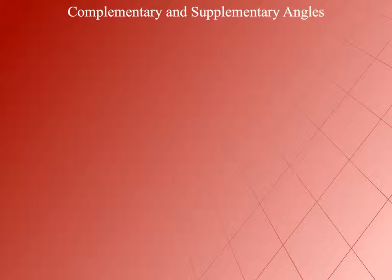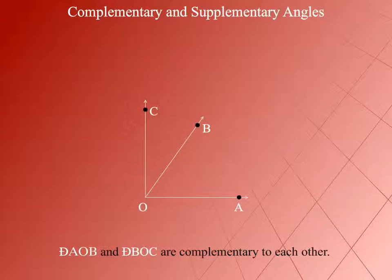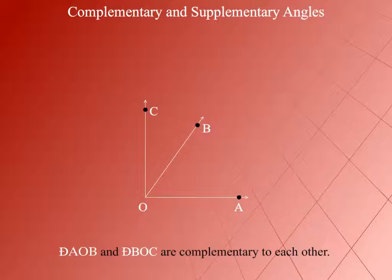Complementary and Supplementary Angles. When the sum of the measure of two angles is 90 degrees, each one of them is called complementary to the other. Here, Angle AOB and Angle BOC are complementary to each other.